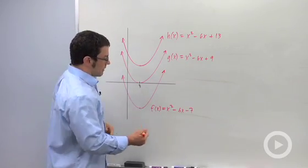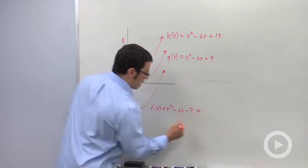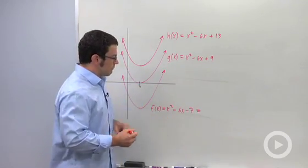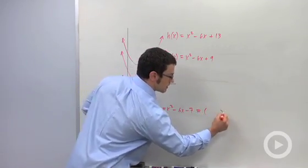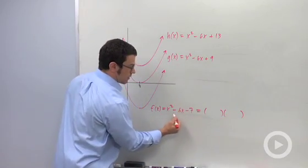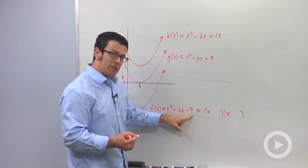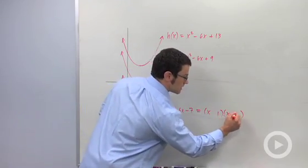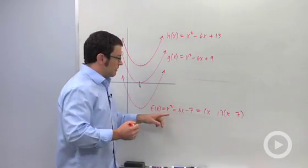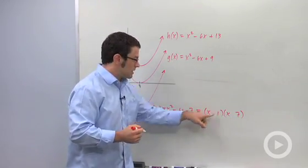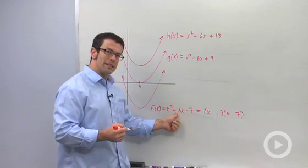For example, for this function, f of x equals x squared minus 6x minus 7. You can factor this in order to find the zeros. The x squared means I'm going to have an x and an x. And the 7 means I'm going to have a 1 and 7. So I just need to figure out whether I need a plus or minus here and here in order to get the minus 6.